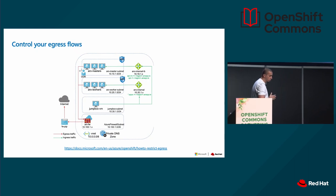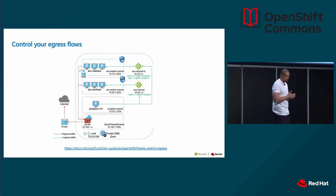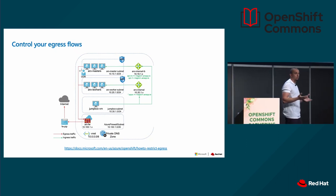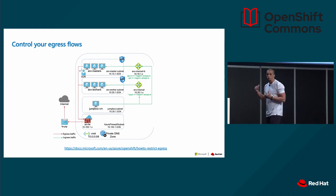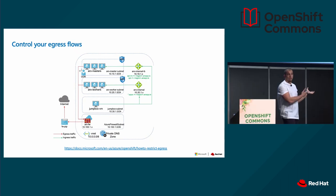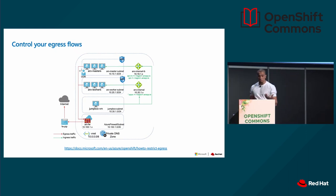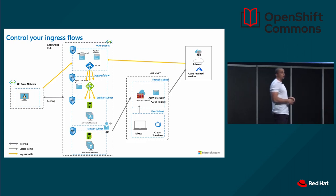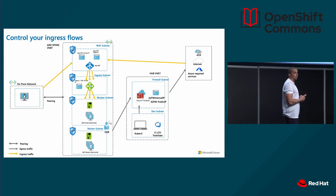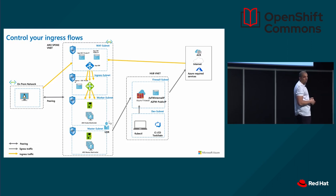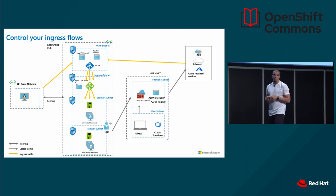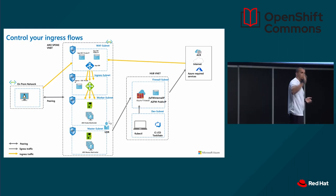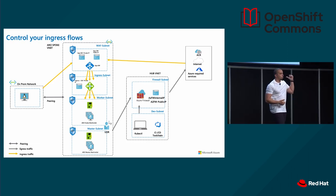Here are a couple of networking examples. You can have a route table from the subnets where the master, infrastructure, and application nodes are running that directs traffic to a firewall — Azure Firewall or any firewall of your choice — and get all egress traffic there. From there, you decide what's whitelisted and what's blacklisted. You can also take this further: egress traffic from the nodes goes through Azure Firewall, but ingress traffic goes through an application gateway — Azure Web Application Firewall or your own. That traffic is stateful, so it maintains the same path back, while traffic originating from the node goes through the firewall.